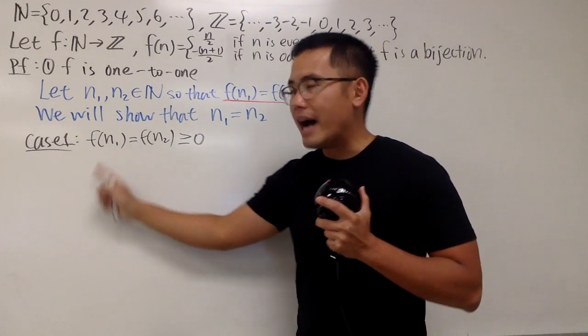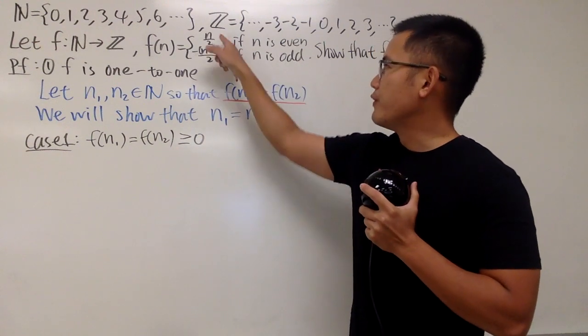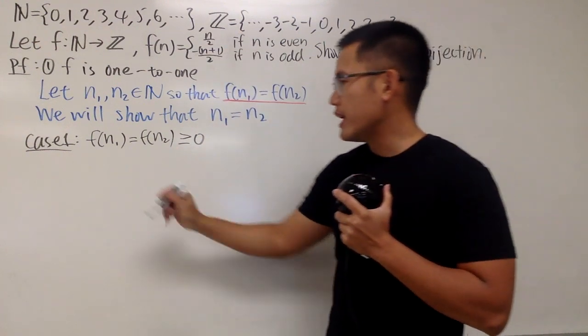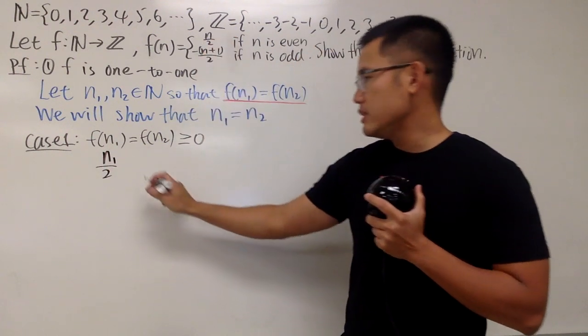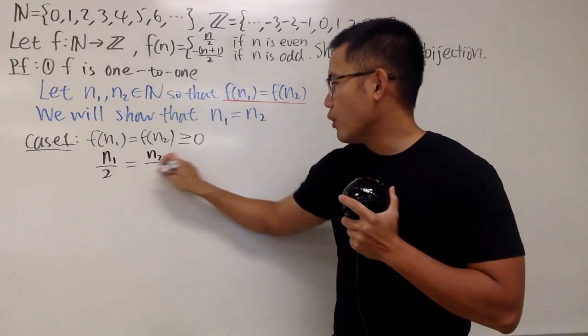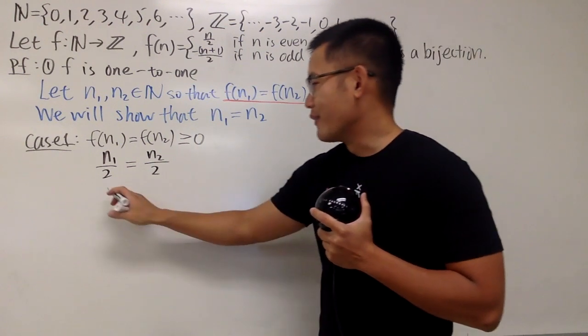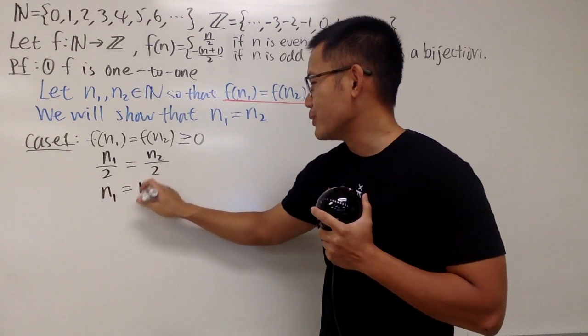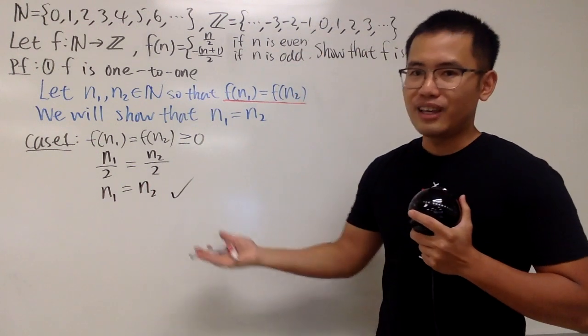So what it means is that I will put n1 into this part of the formula, likewise, I will do the same for n2. Therefore, we will get n1 over 2, which is equal to n2 over 2. And, as you can see, you can just multiply both sides by 2. Of course, this is n1 is equal to n2. And you see, we achieved that. Done. That's case 1.